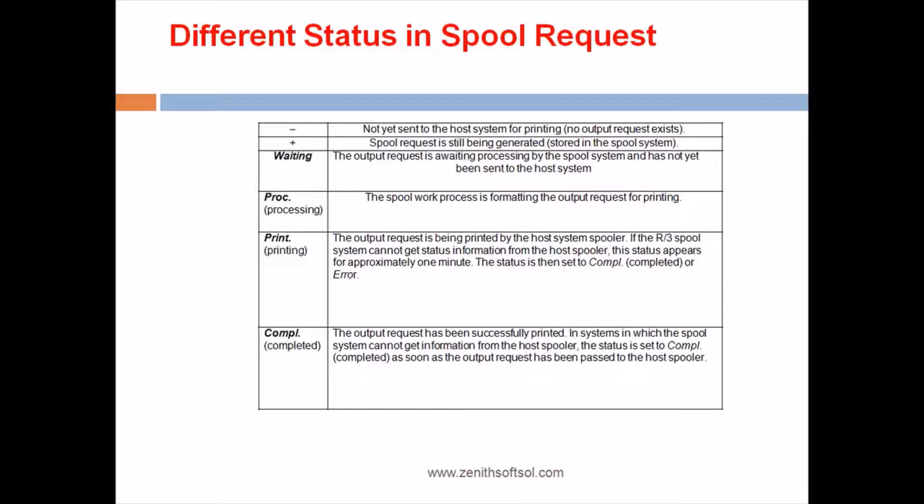Now print, the start of print is nothing but the output request is being printed by the host system spooler. If the R/3 spool system cannot get status information from the host spooler, this status appear for approximately one minute. The start of print is then set to complete or error, means when you give the print, it will pop up a menu saying that the print is under processing, so we don't know whether it will be complete or it could give an error.